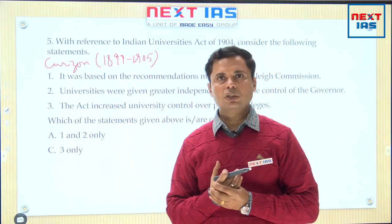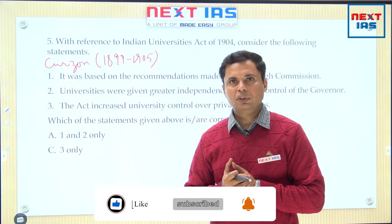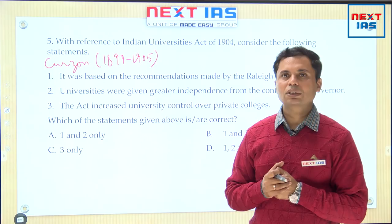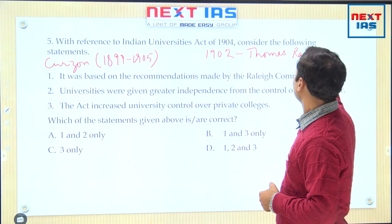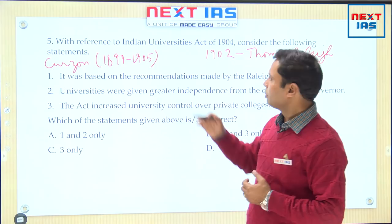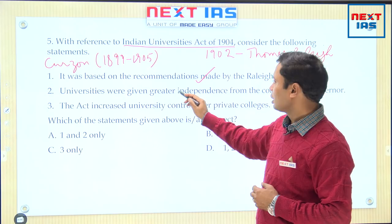With the sweeping wave of nationalism, Indian youth had been attracted towards colleges where nationalist ideas were being promoted. To keep a check on the spread of nationalist ideas, Curzon appointed the Thomas Raleigh Commission in the year 1902, headed by Thomas Raleigh. Based on its recommendations, Curzon's government passed the Indian Universities Act 1904. So the first statement is correct — it was based on the recommendations of the Raleigh Commission.